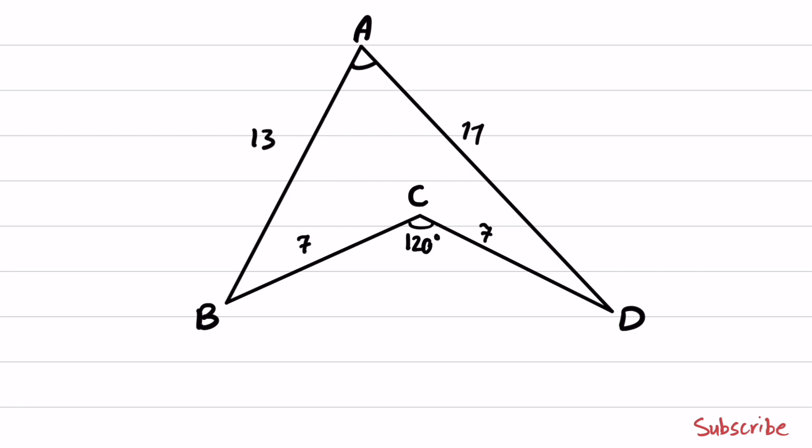I will add a line segment connecting B to D. If you take a look at BCD triangle, this is an isosceles triangle where BC and CD sides are equal.